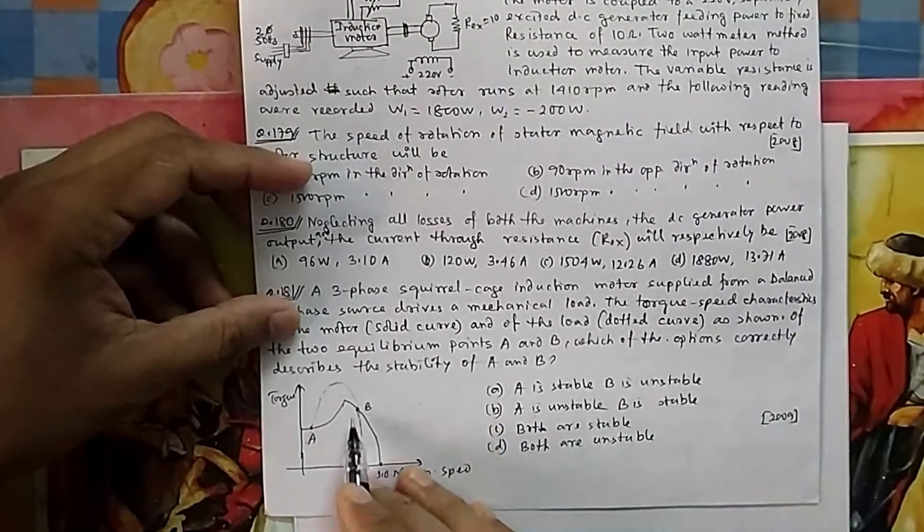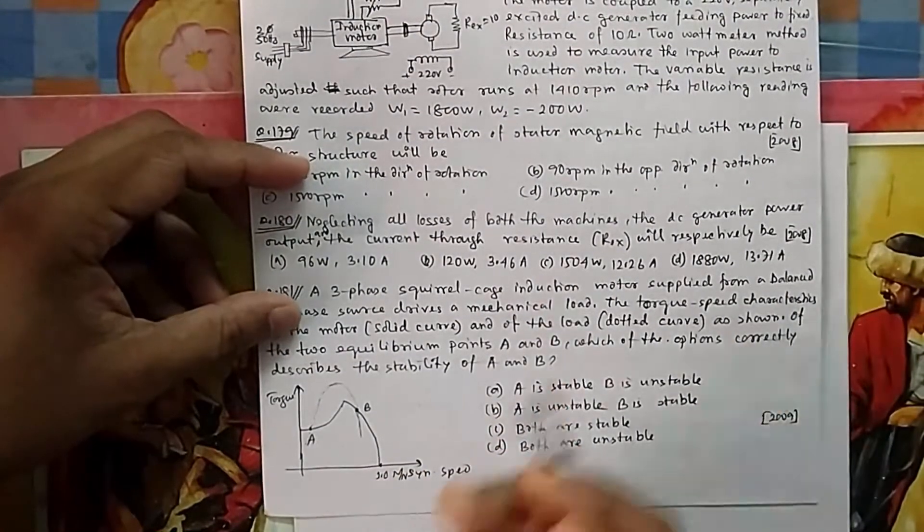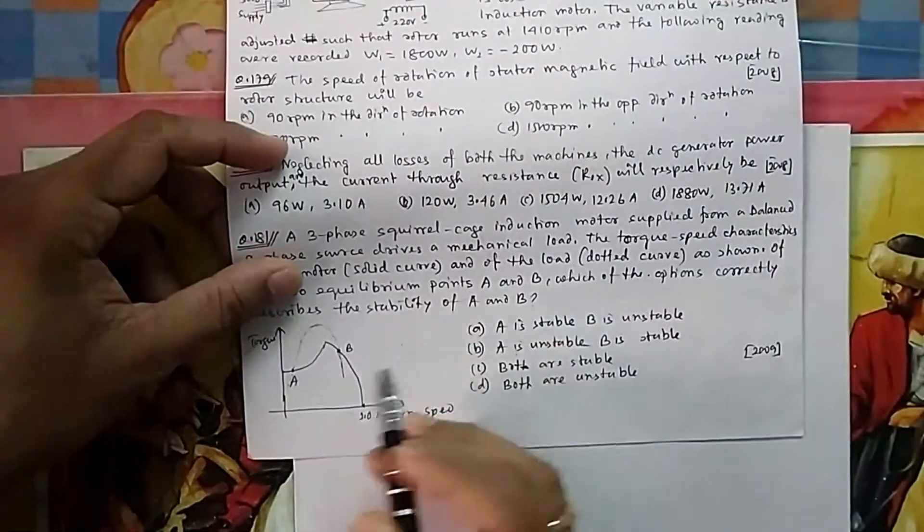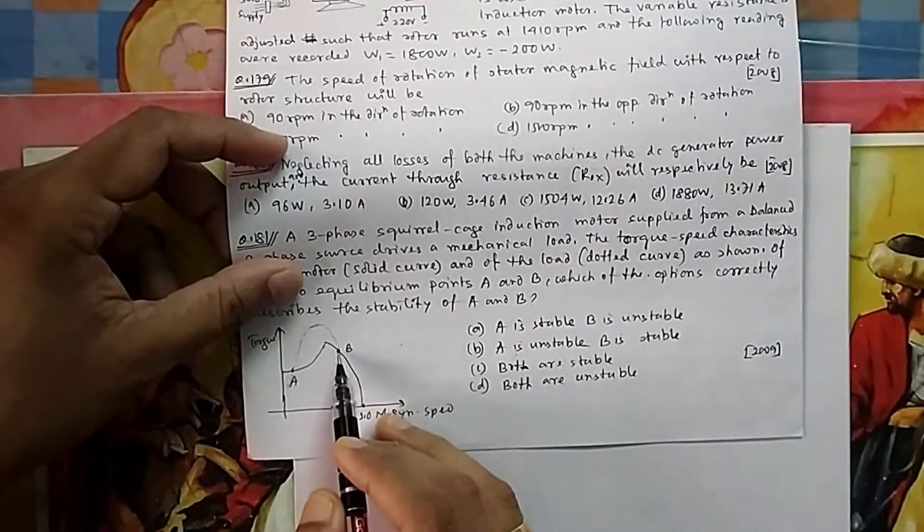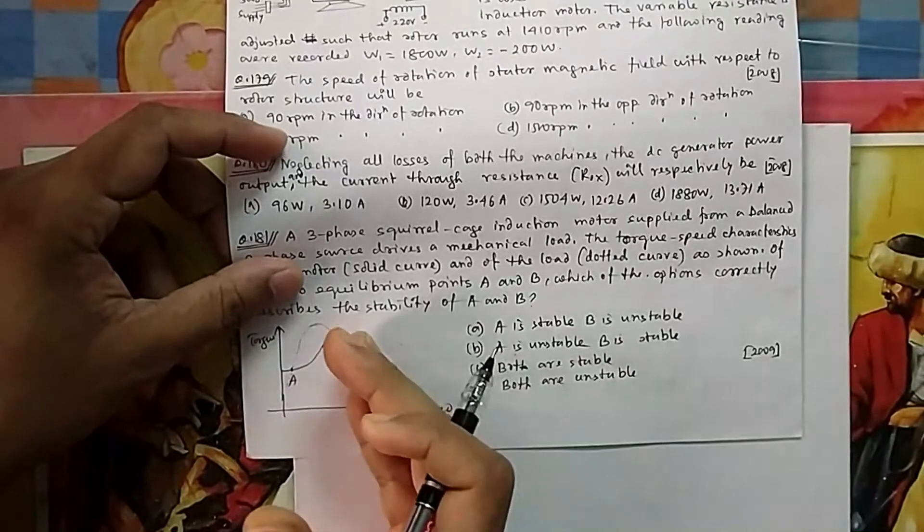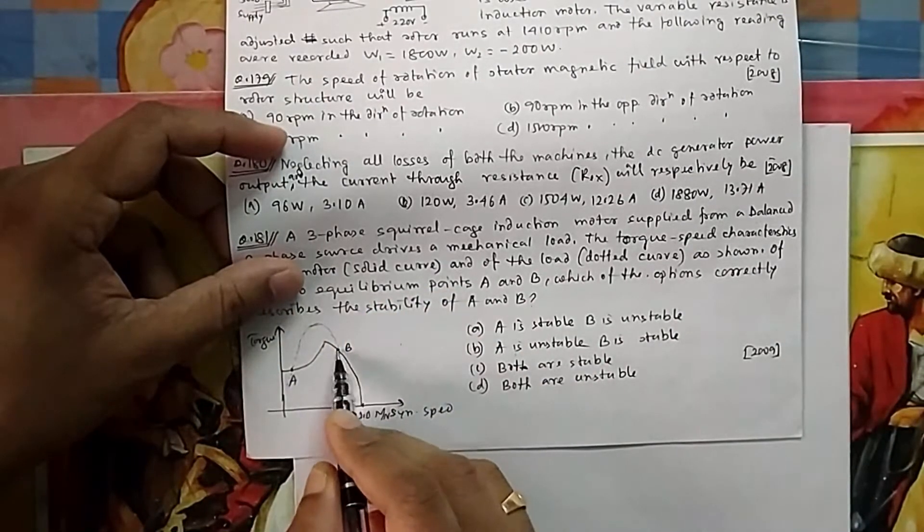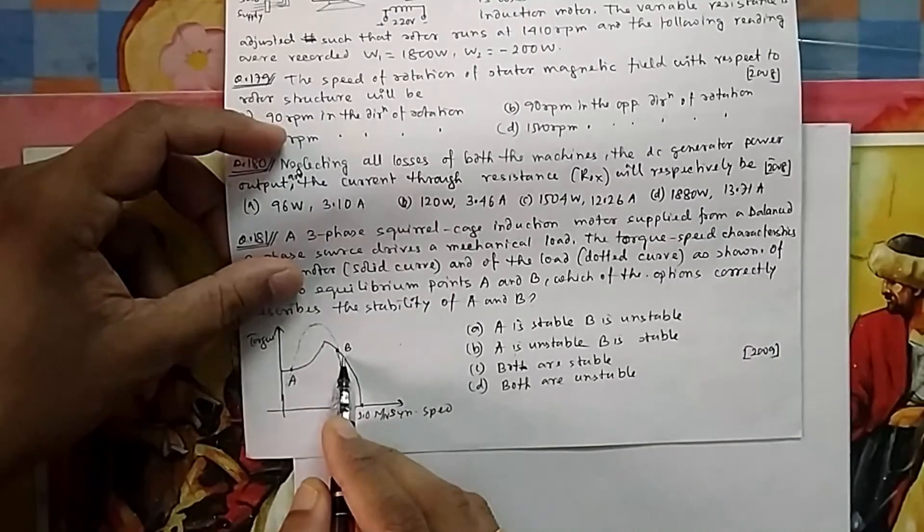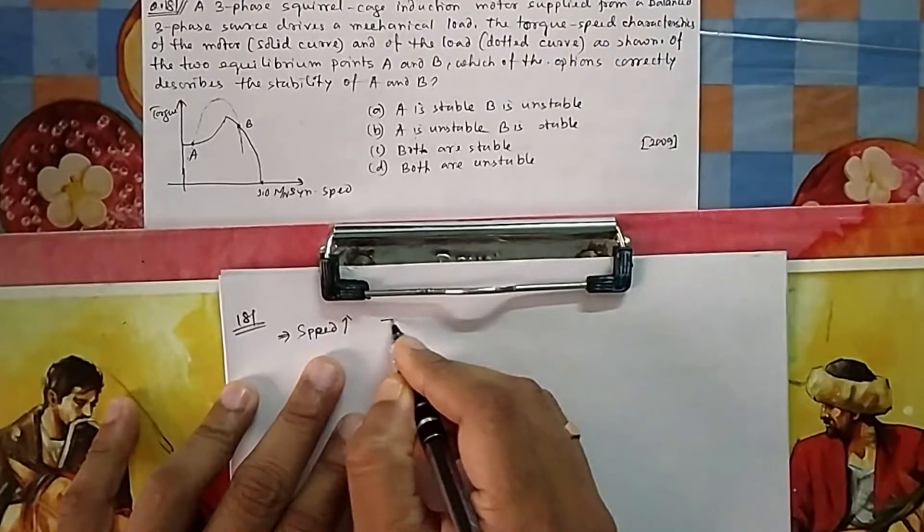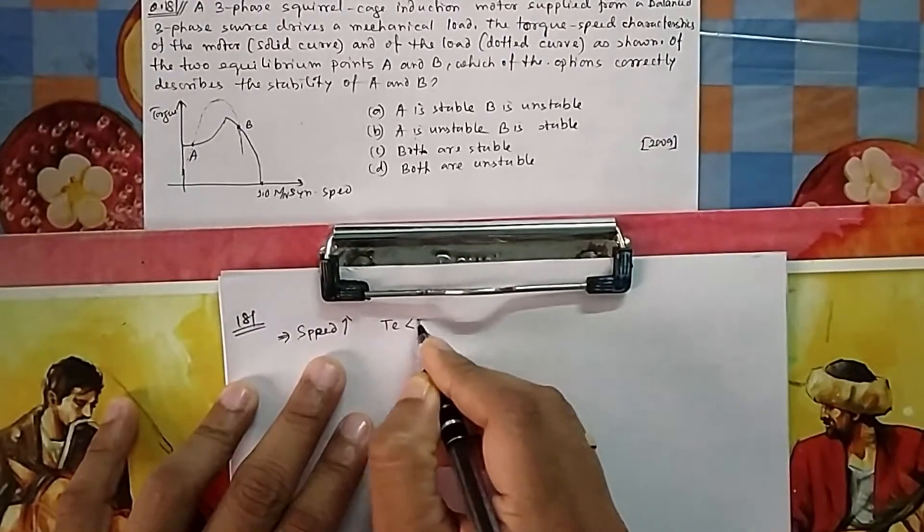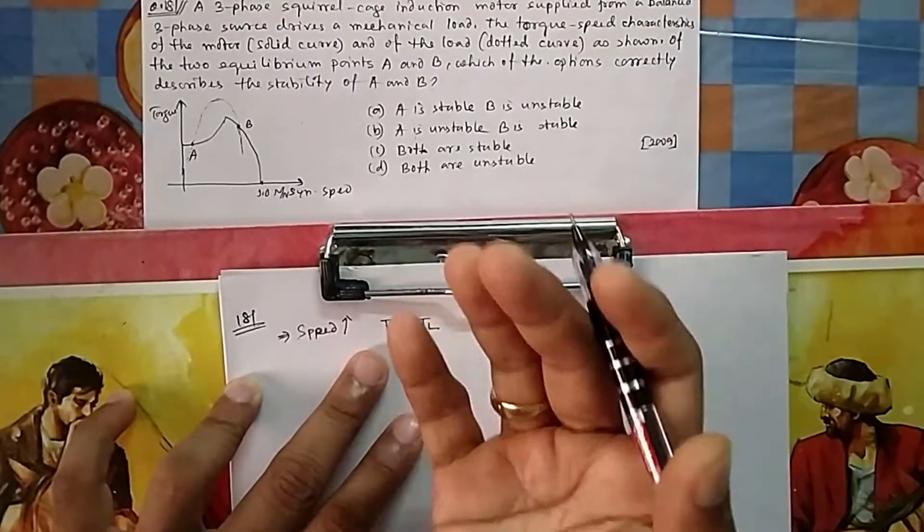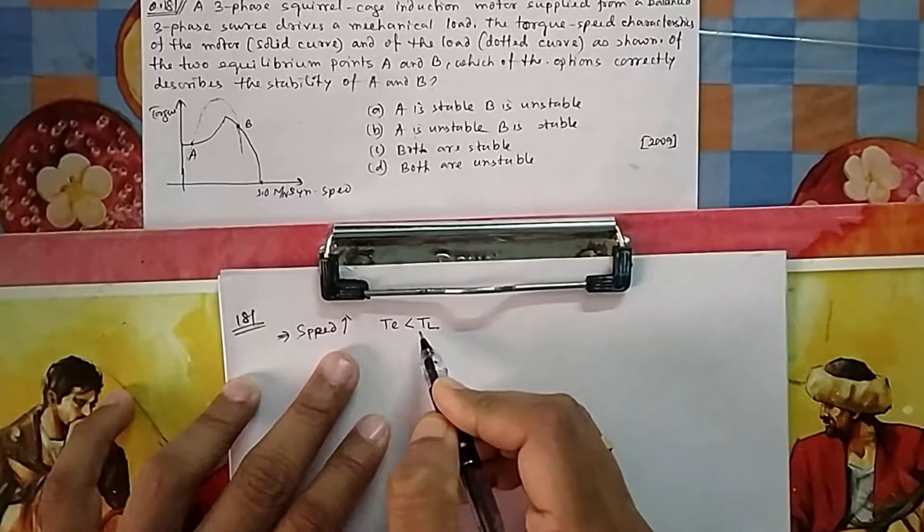If you come at B, a stable point should return to its original position after any disturbance. At B, suppose some disturbance occurs due to which speed increases. The natural tendency of the motor should be to come back to its original position. If speed increases, then the torque developed by motor is on this line. My natural tendency should be TE less than TL. If this happens, the motor will automatically try to bring down the speed.